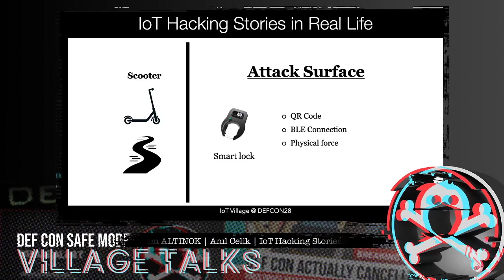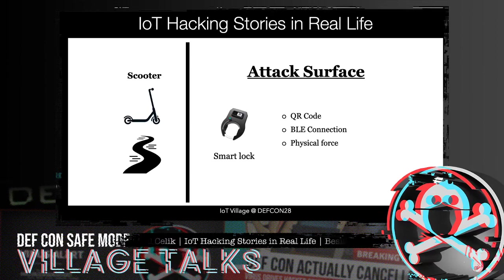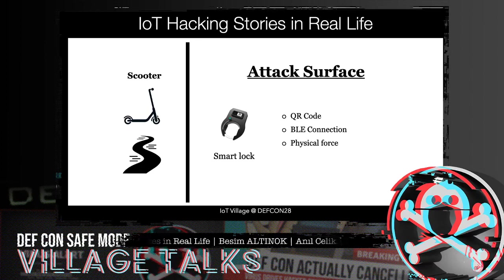The smart lock is what the user uses to lock and unlock the smart electric scooter. It usually has a QR code and uses Bluetooth Low Energy communication. It is also the main point associated with the mobile application. The most dangerous point is the QR code — it does not directly harm the smart scooter, but it is an attack vector targeting users. For example, you can try to install malware on a user's phone with a fake QR code, or redirect users to a phishing page using a fake QR code placed on the smart scooter.